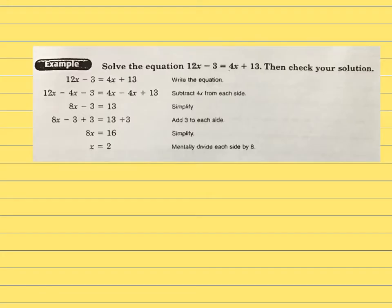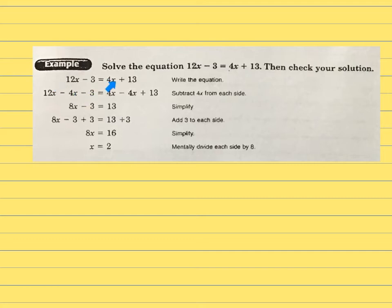This first equation has already been worked out, but I'm just going to go over it. It says 12x minus 3 on the left side, and 4x plus 13 on the right side. Our goal is to isolate the variable — we want all the letters on one side and the constant numbers on the opposite side. I like to draw a line down the equal sign to separate the left and right sides.